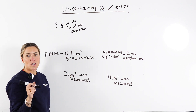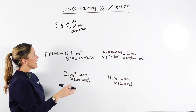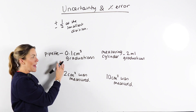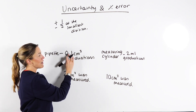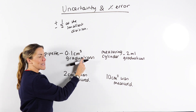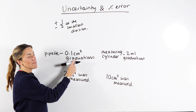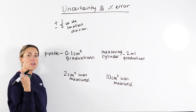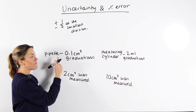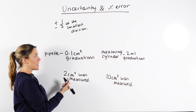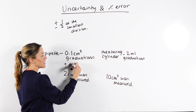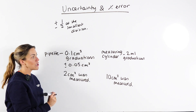Let's look at two easy examples. If you're measuring a liquid with a pipette, this pipette has graduations that are 0.1 centimeters cubed — that's the smallest division on the piece of equipment. So when you measure using that pipette, the uncertainty is going to be half of that smallest division. Therefore the uncertainty using this pipette would be plus or minus 0.05 centimeters cubed.